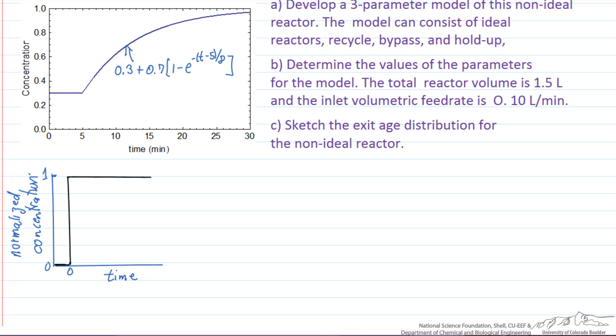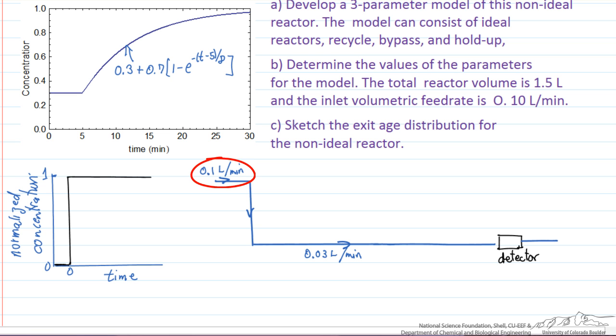We can start drawing what we might imagine this combination of reactors would be where we have a bypass. So I've started to draw the diagram where we have 0.1 liters per minute coming into the reactor, and then 0.03 liters per minute, 30%, is bypassing. So this is the bypass.